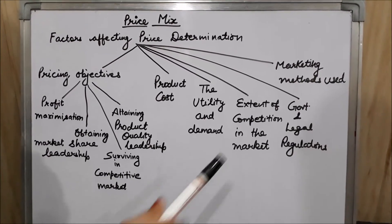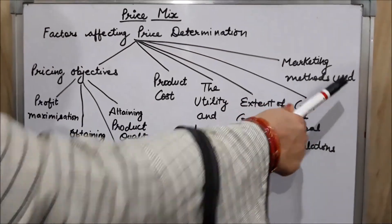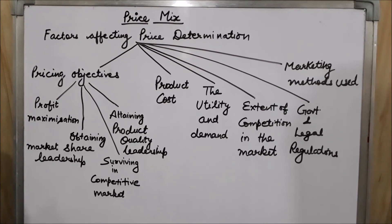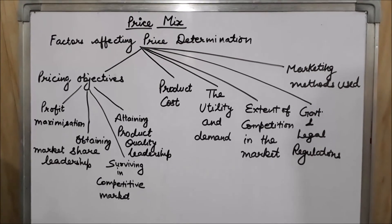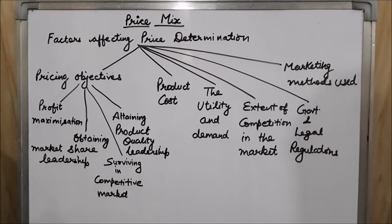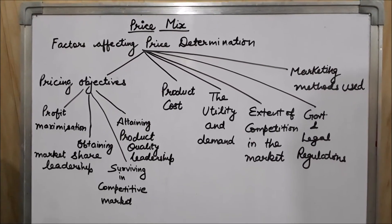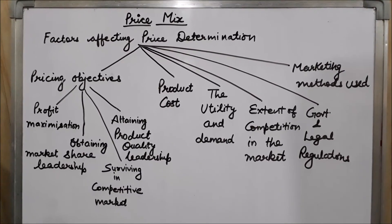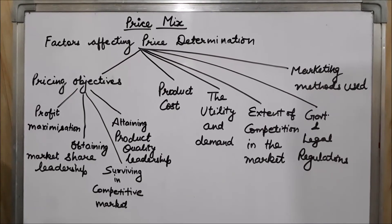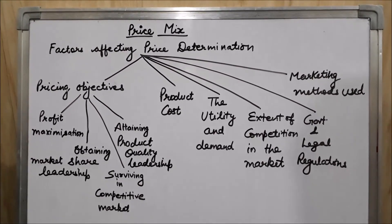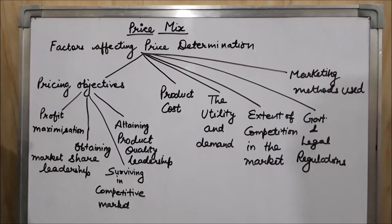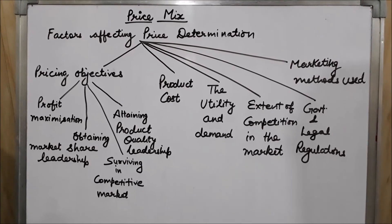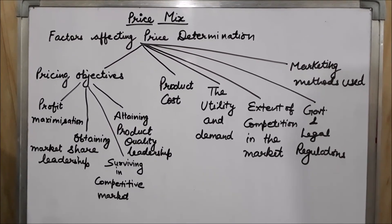The last factor to be considered is marketing methods used. While fixing the price, the marketing methods used by the marketer must be considered — how much money is spent on advertisement and other sales promotion techniques such as giving rebates, discounts, free gifts to consumers, lucky draws, or different contests organized. All the costs of these marketing methods must be included while fixing the price.